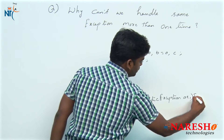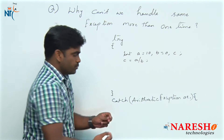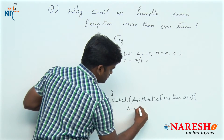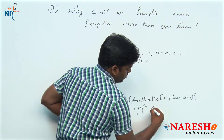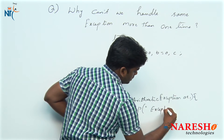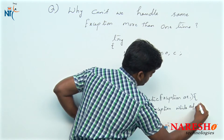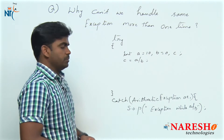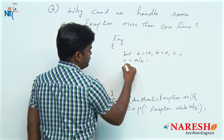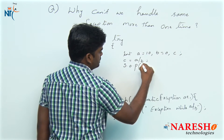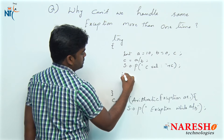We want to handle that ArithmeticException and print a message clearly: System.out.println — exception while performing a / b. If it executes successfully, we are printing the value of c.